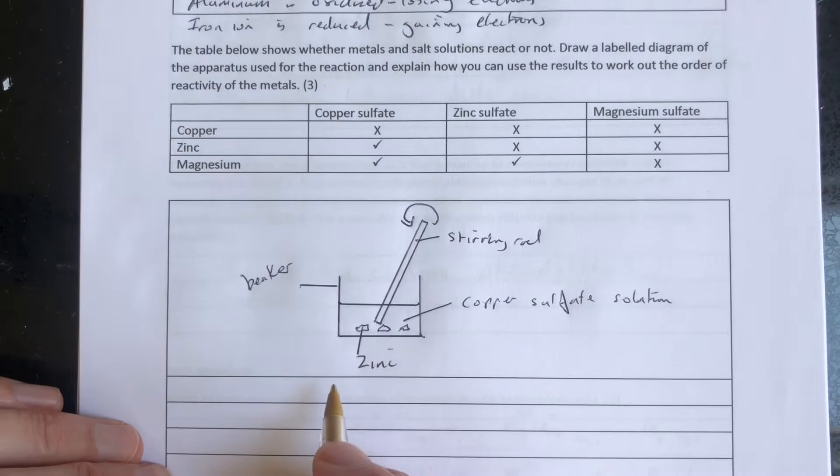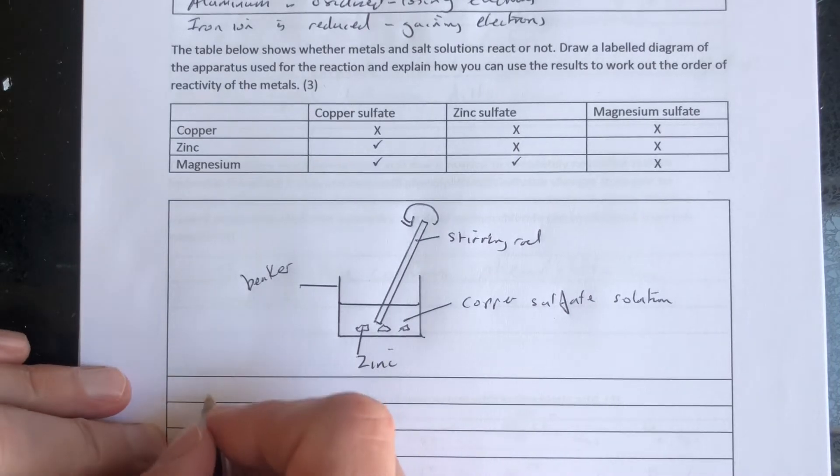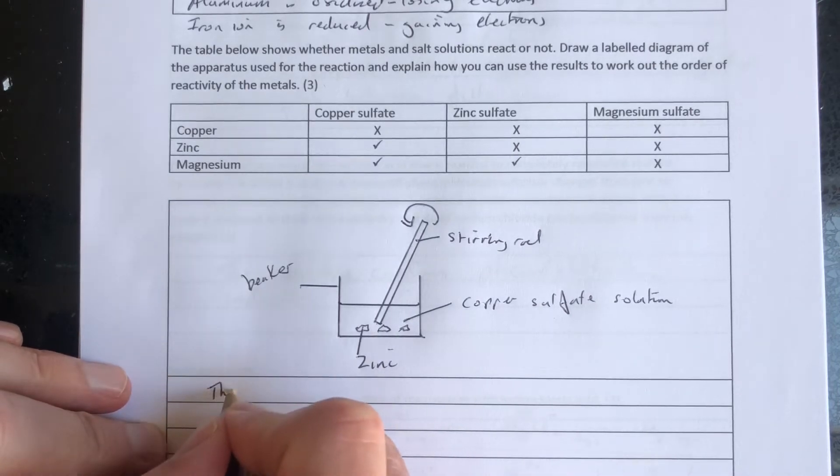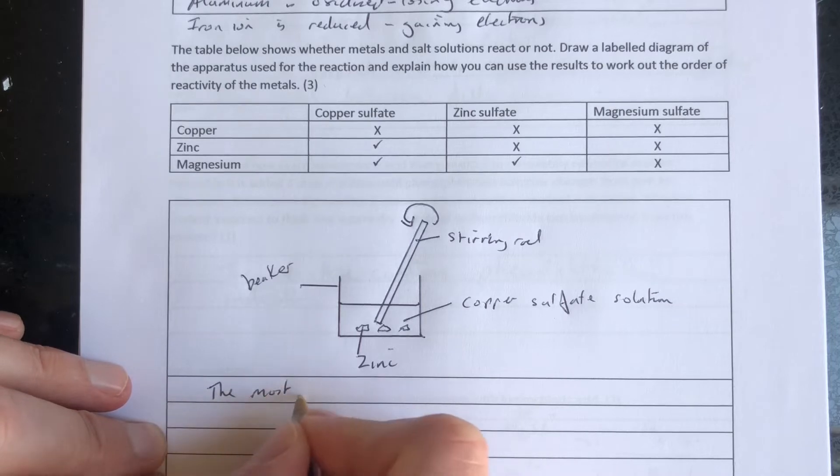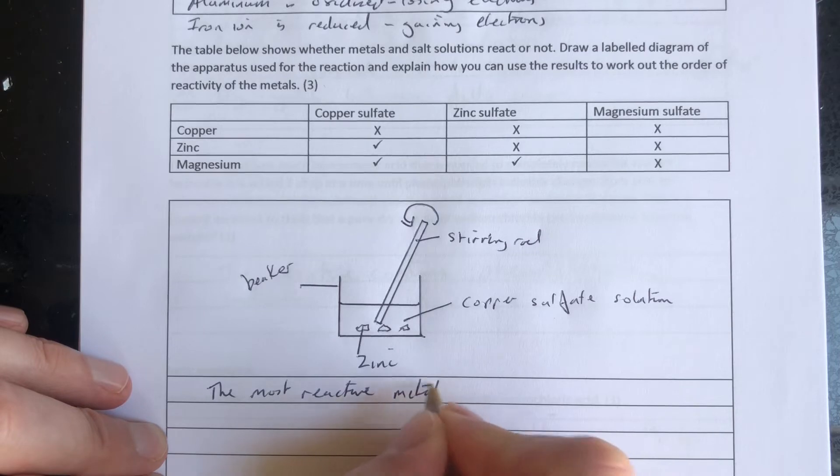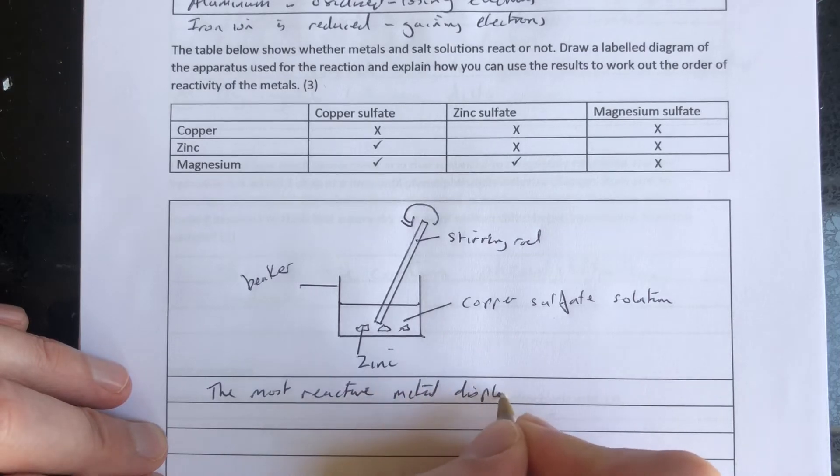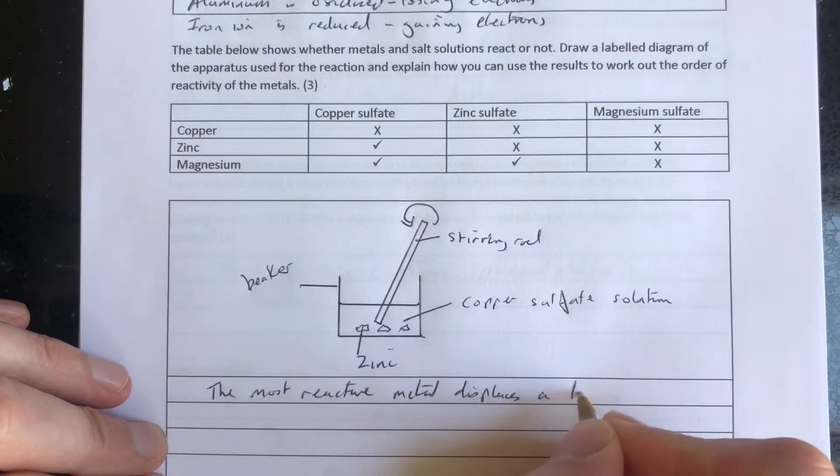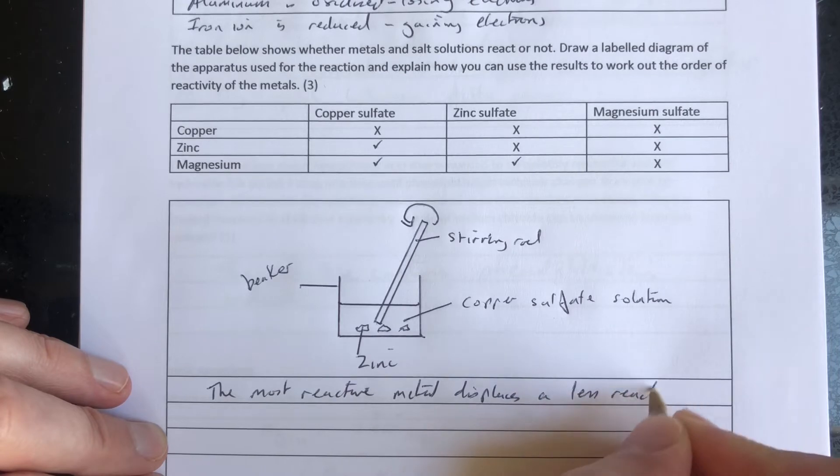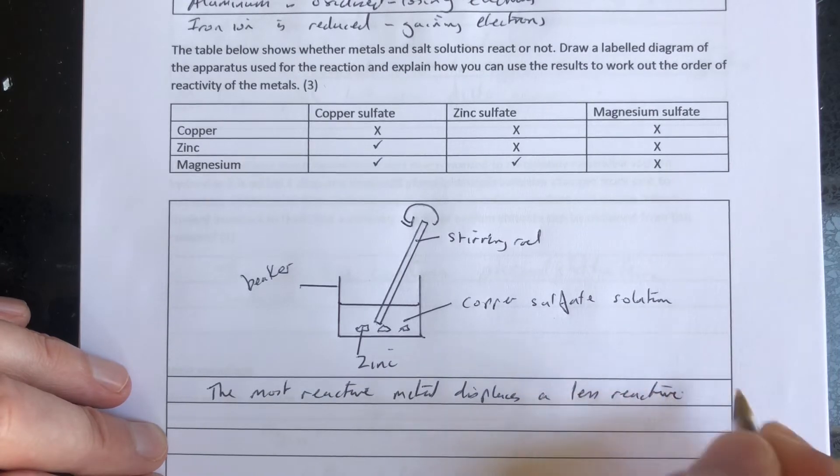So there's our apparatus. The rule is: the most reactive metal displaces a less reactive metal.